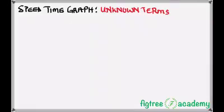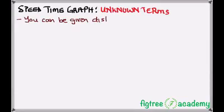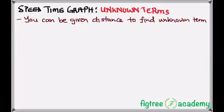So in the last lessons we were looking at all principles that govern the speed-time graph. Then in this lesson I want to highlight how to solve unknown terms. It can be tested to find an unknown term given the distance, so it will be required to find either speed or time.